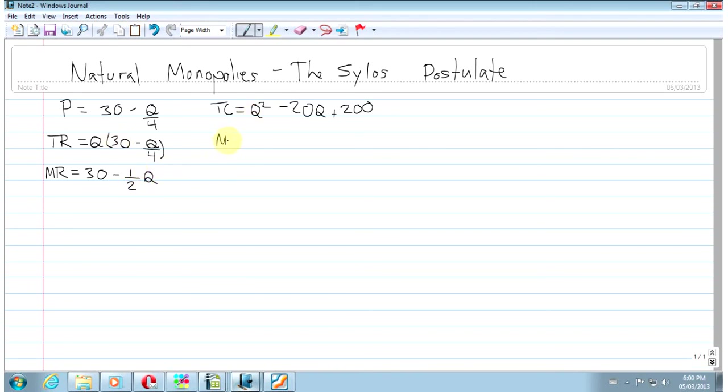And then if I take this marginal cost here, I get 2Q minus 20. Alright, so MC equals MR is our optimality condition. This should all just be very basic review from the last video or from something you already knew.